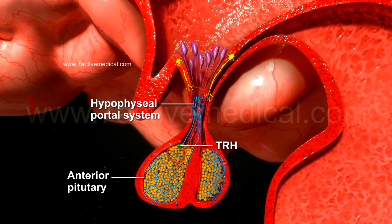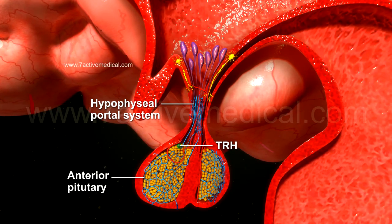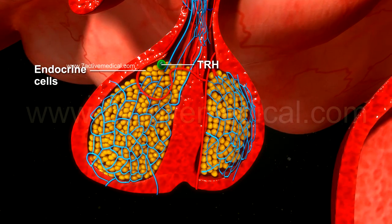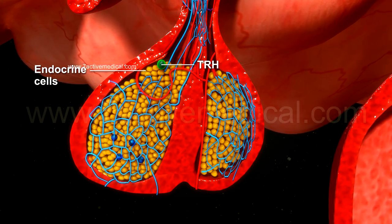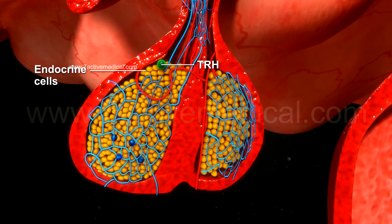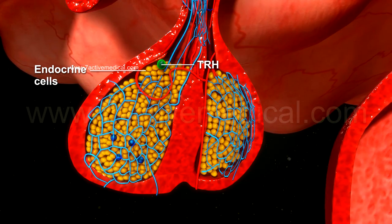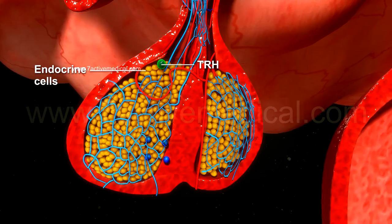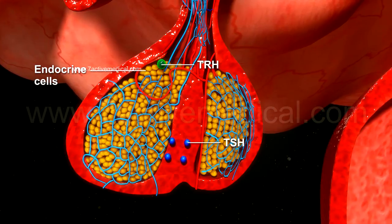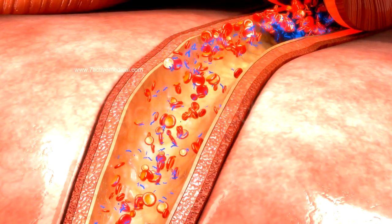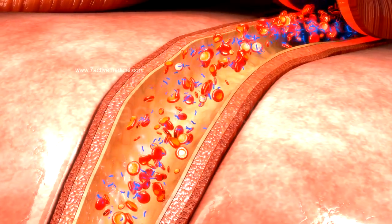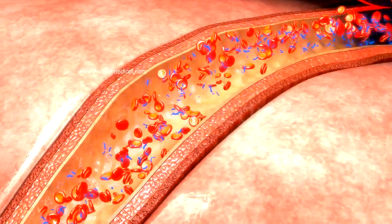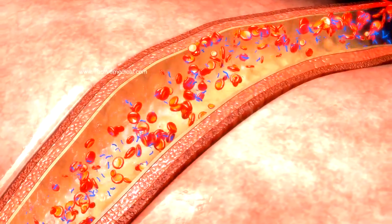In the anterior pituitary, the TRH binds to receptors on the endocrine cells, stimulating those cells to secrete thyroid-stimulating hormone, or TSH. The TSH eventually enters the systemic circulation, ultimately reaching the cells of the thyroid gland.